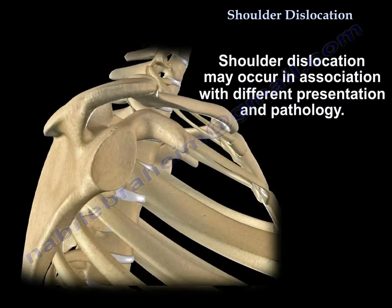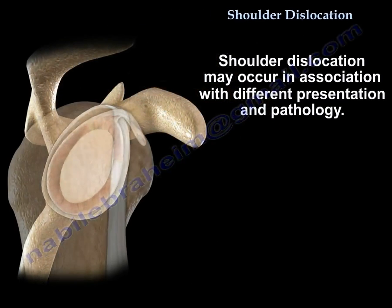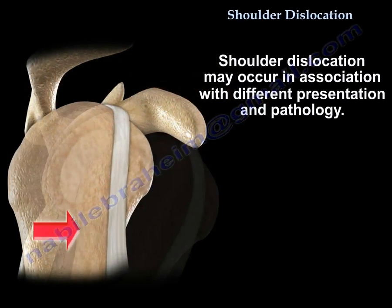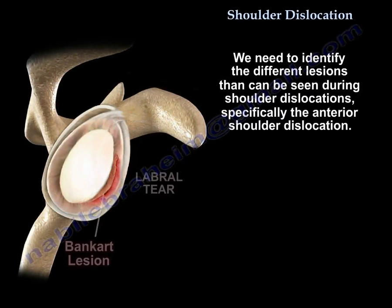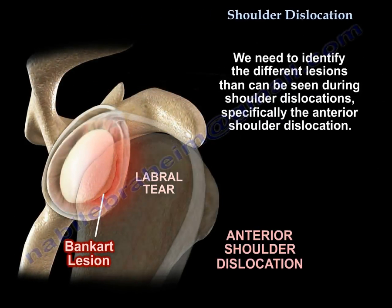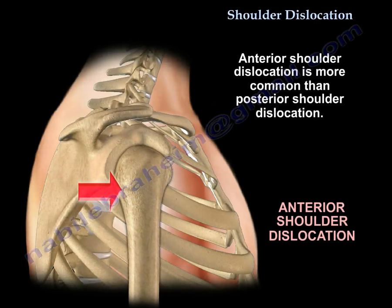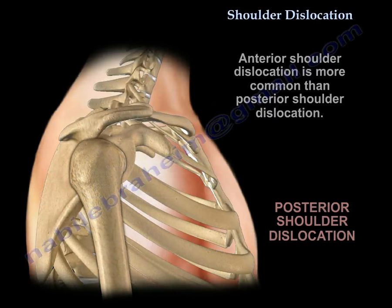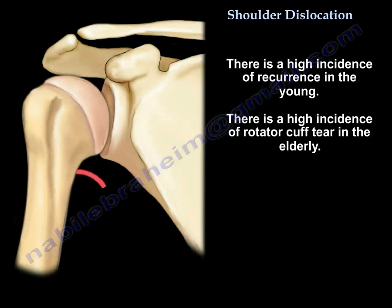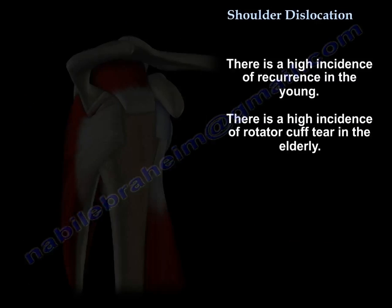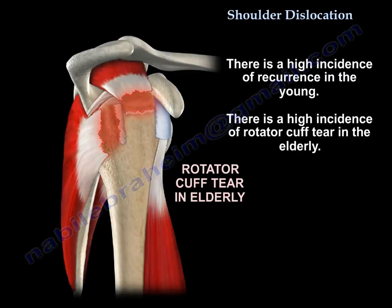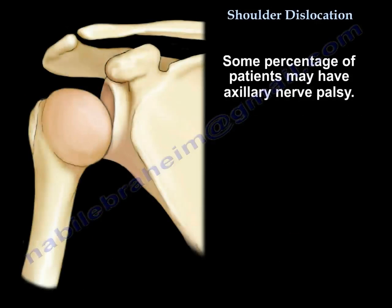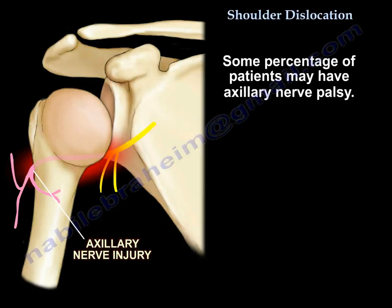Shoulder dislocation can come in different presentations and pathology. The goal of this video is to identify the different lesions that the doctor can see during shoulder dislocation, specifically anterior shoulder dislocation. Anterior shoulder dislocation is more common than posterior. There is a high incidence of recurrence in the young, a high incidence of cuff tear in the elderly, and some percentage of patients may develop an axillary nerve palsy.